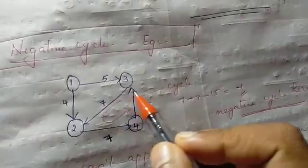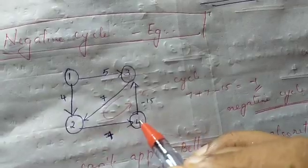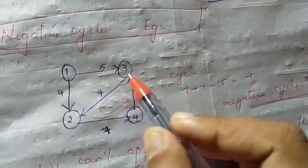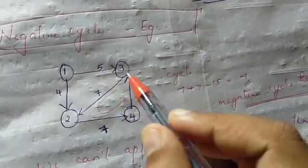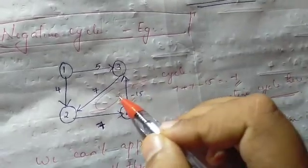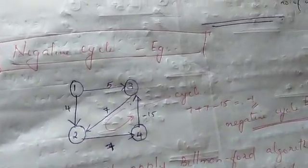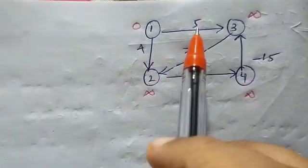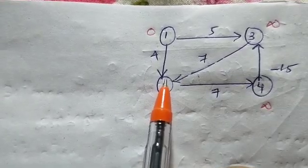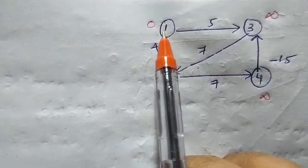Now let's see negative cycle detection. Consider a cycle: 3→2, 2→4, 4→3. This forms a cycle. The edge weights are: 3→2 is 7, 7 plus 7 is 14, 14 minus 15 is minus 1 — so this is a negative cycle. For 4 vertices, that is 4 minus 1, which is 3 iterations.